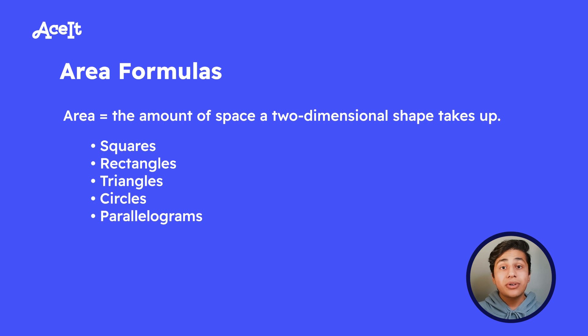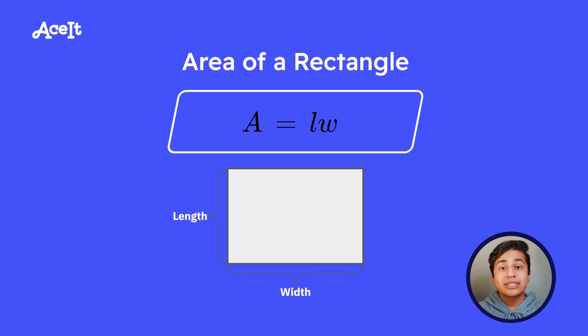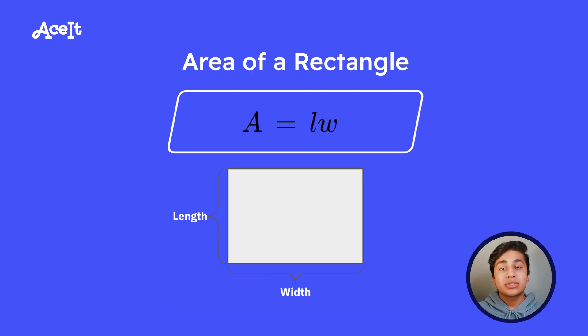And the first area you need to know is the area of a square, which is simply the square's length times its width. And then moving on, we have the area of a rectangle. Squares are rectangles, but not all rectangles are squares. But either way, the length times its width is going to be the area.